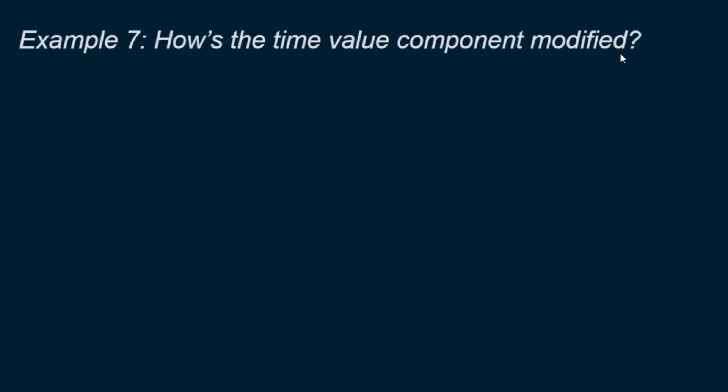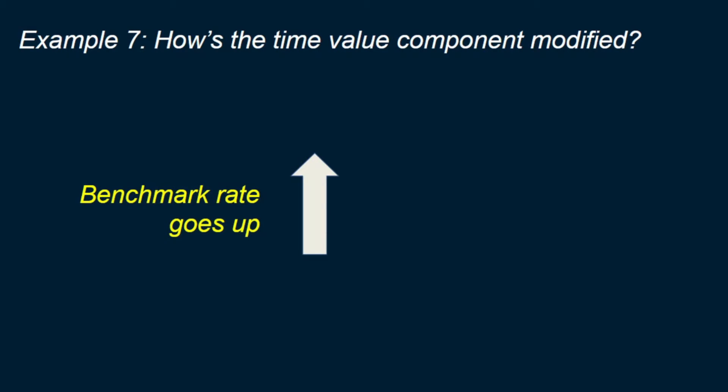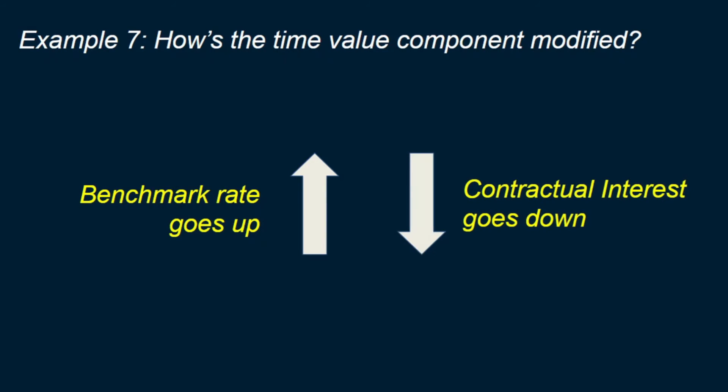Don't get this wrong: there can be a basic lending arrangement where there is no interest at all. What we're saying is that if there is interest on principal but no interest on interest, then the time value of money would be considered modified. Having no interest means having an interest rate of zero percent, which is consistent with the basic lending arrangement.